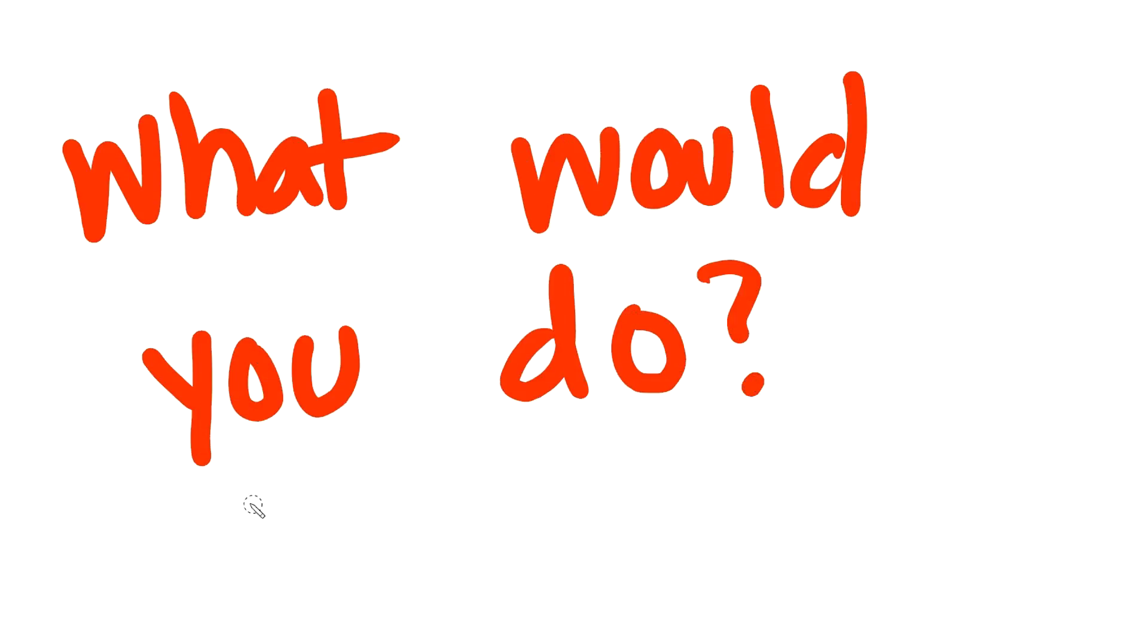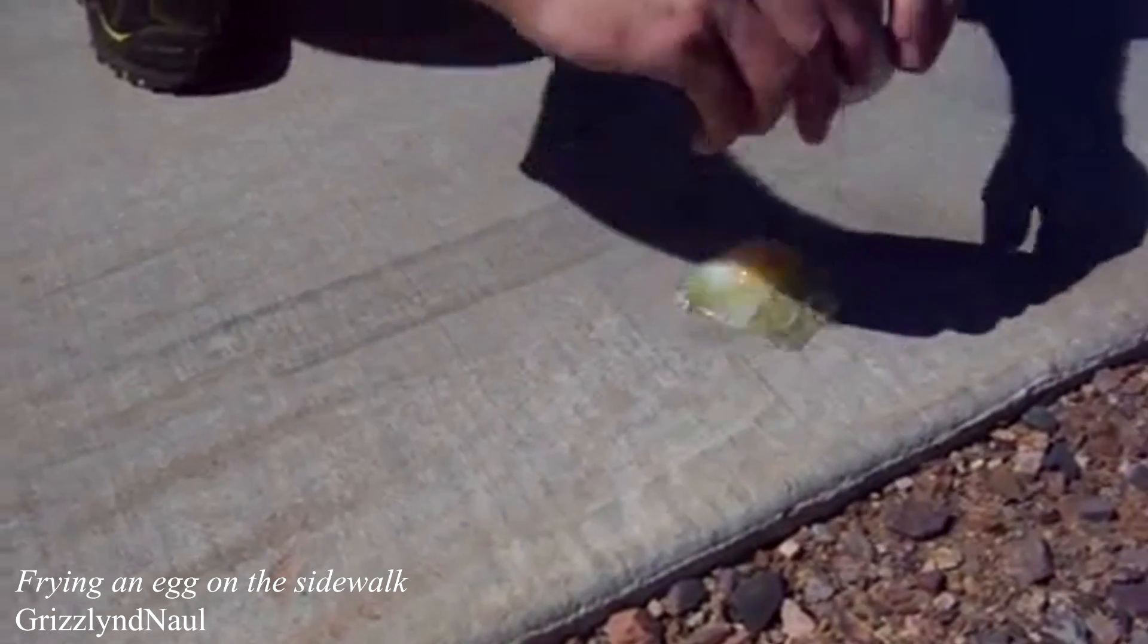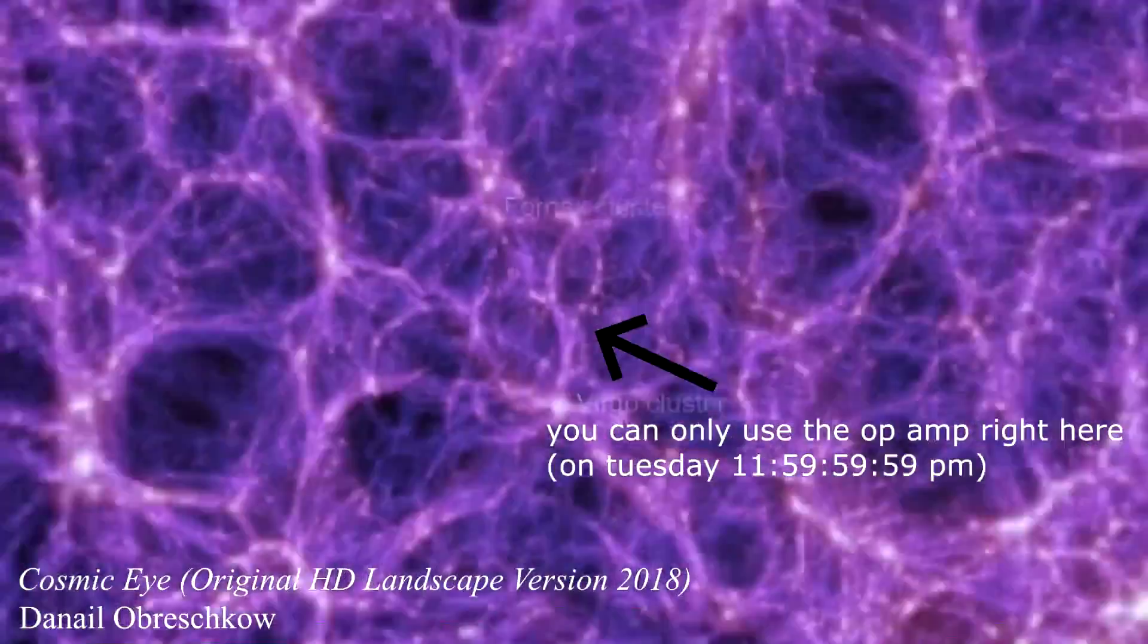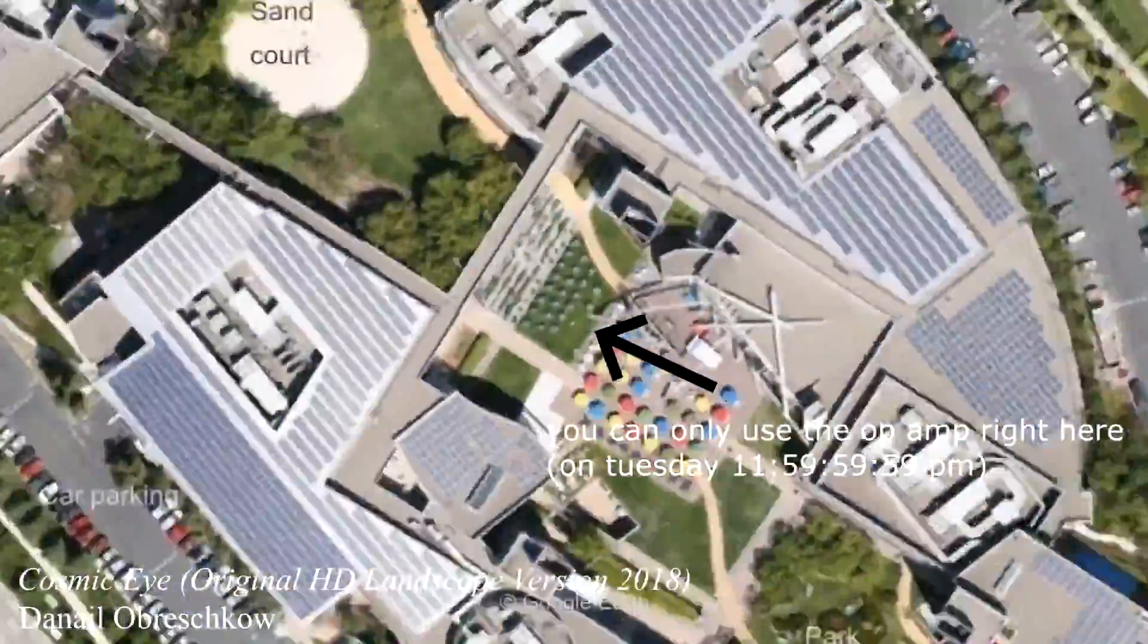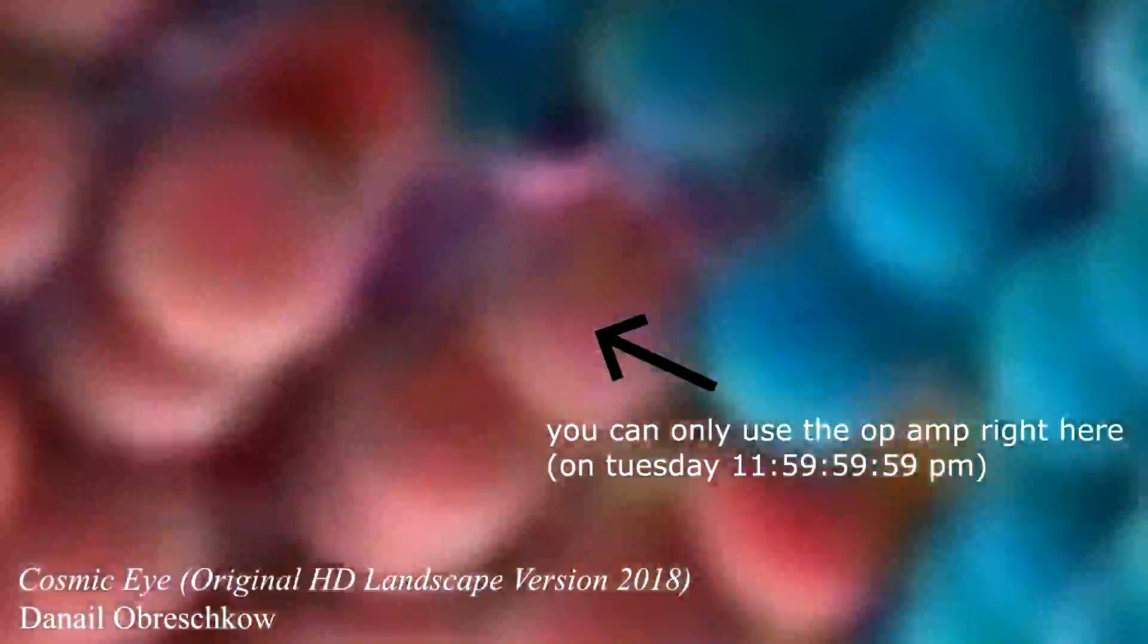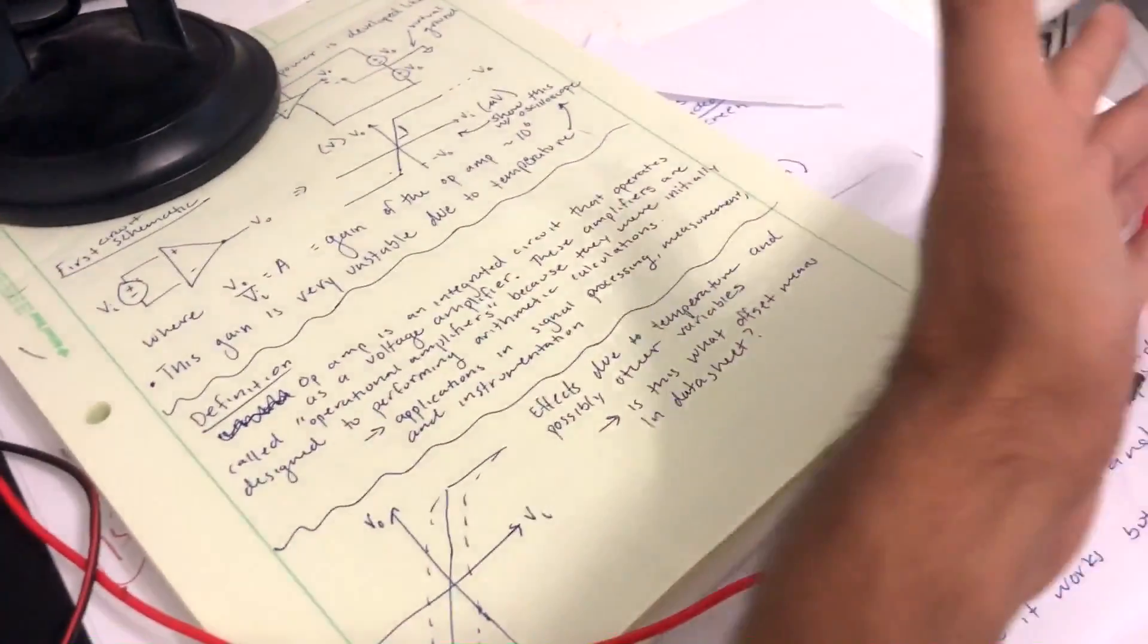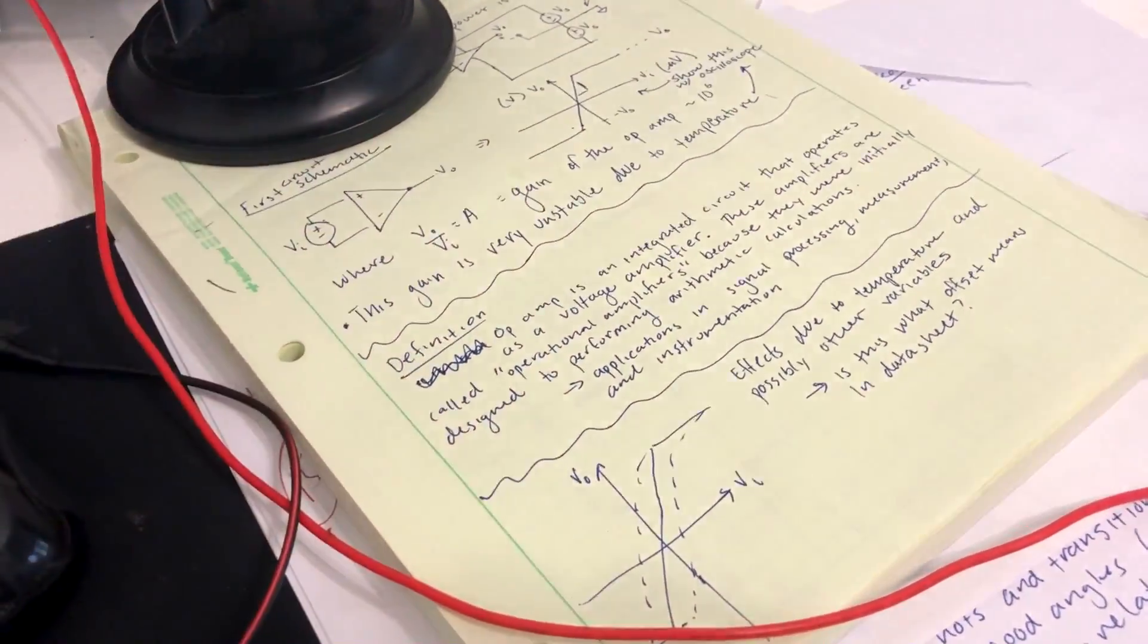So what if you want to amplify a signal by 2 instead of 1 million? Or what if you want to use the op-amp in hot climates? You can't just limit yourself to using the op-amp in the western hemisphere on the 40th parallel on Tuesday when it's about to be Wednesday. It seems like the op-amp is just another piece of trash.